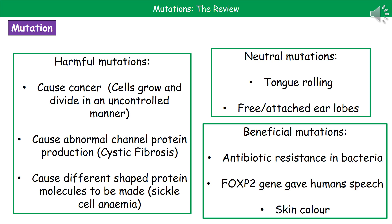The last category is beneficial mutations. One of the most common — not really beneficial to us as humans but certainly beneficial to bacteria — is the development of antibiotic resistance, meaning a bacterial infection may not be killed by antibiotics because it's resistant to that particular antibiotic. For humans, a mutation in a gene called FOXP2 gave us our speech, and a mutation in skin color allowed us to live safely in all the different regions around the planet.